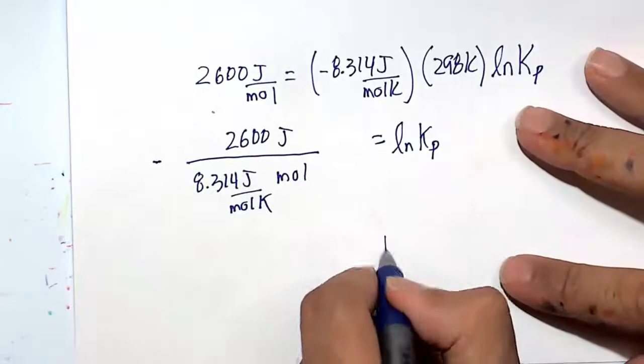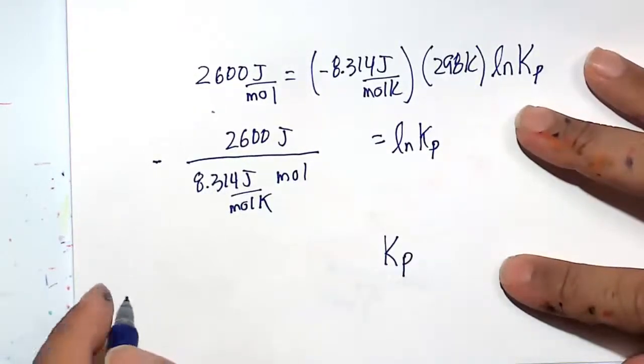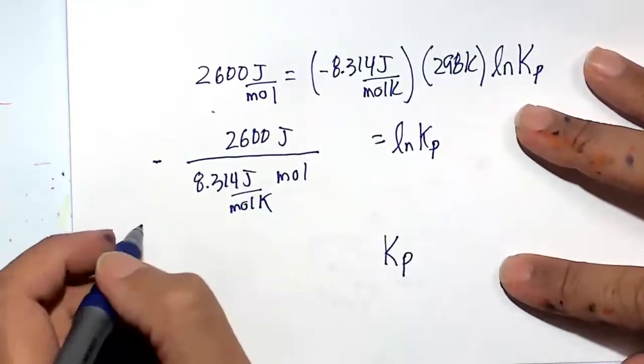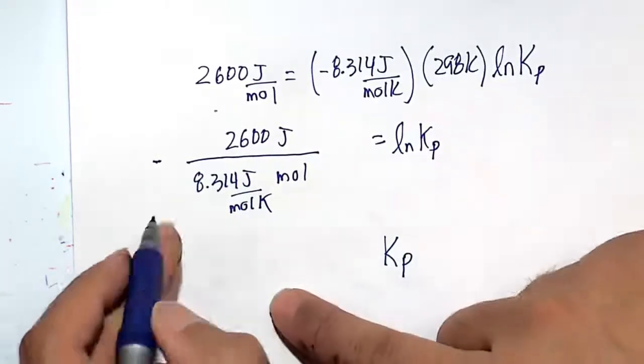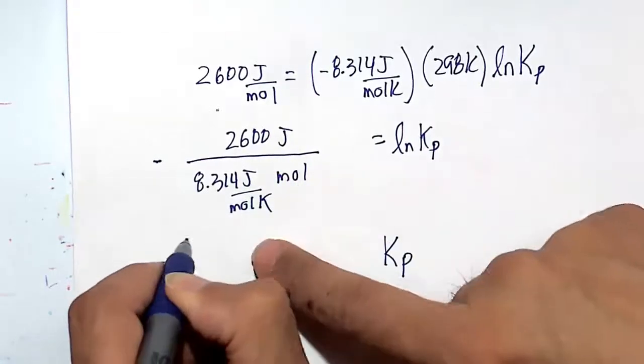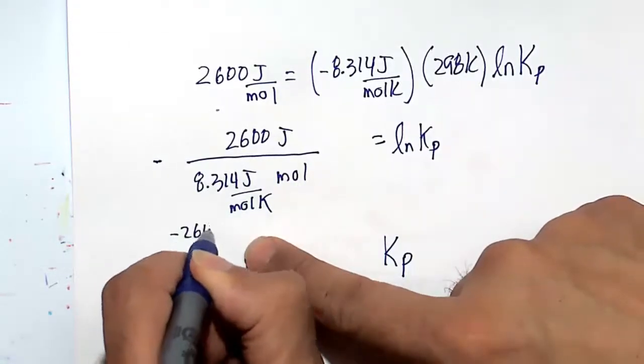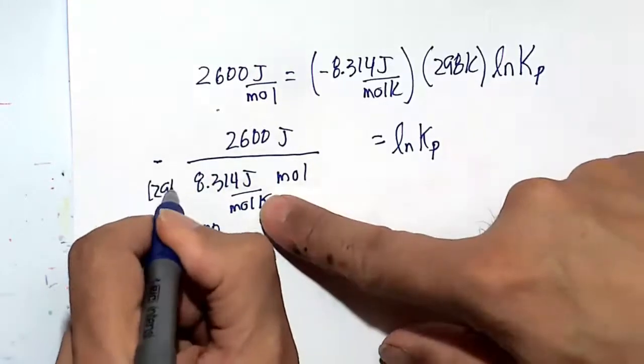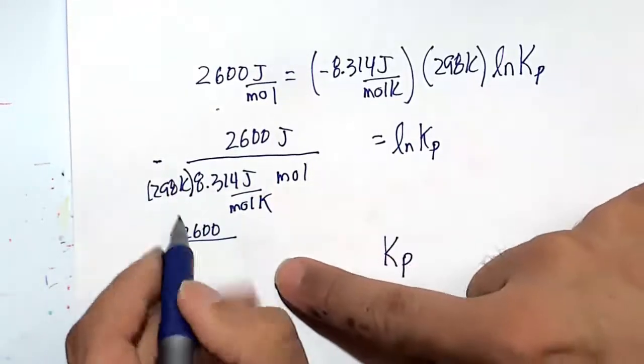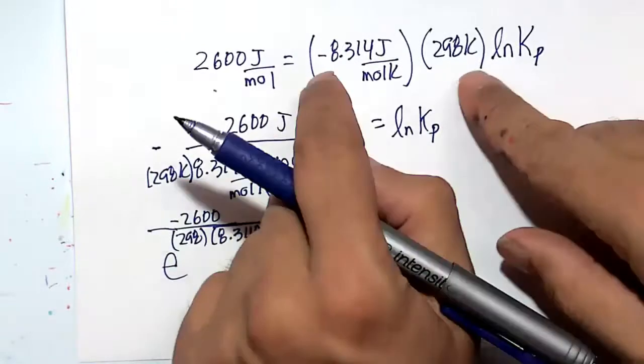To get Kp in and of itself, we take the inverse log, so E of both sides. So taking E of both sides of the equation, E to the power of natural log of Kp is just Kp. E to the power of this fraction is something we'll have to calculate on our calculator. We have a 298 Kelvin here as well.